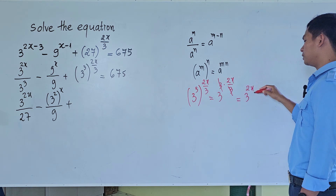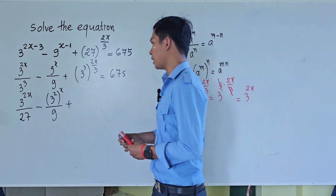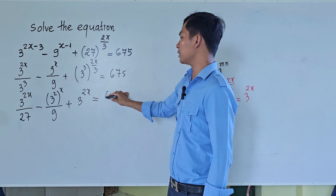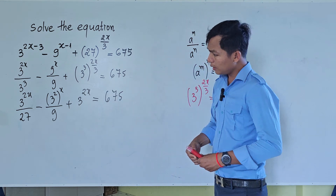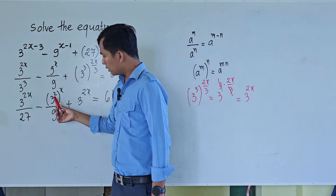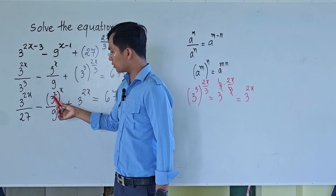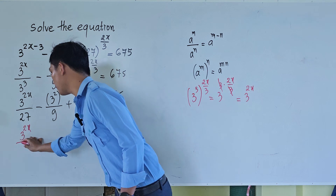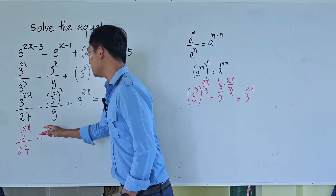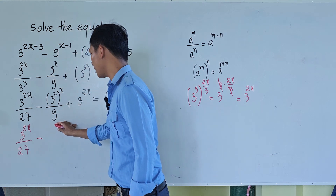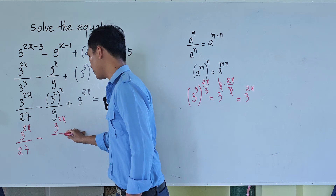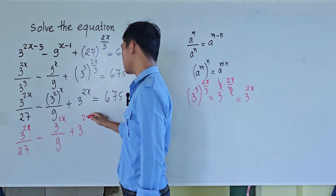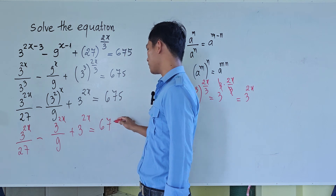So now taking our equation, we have 3 to the power 3, and 3 to the power 4, and 3 to the power 2x. Combining these, we get 3 to the power 4 equal to 675.